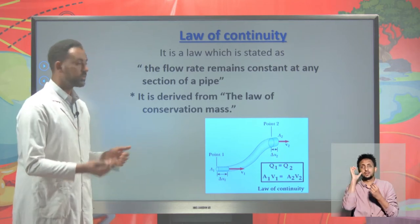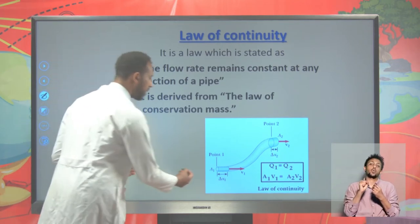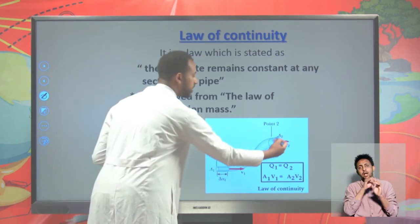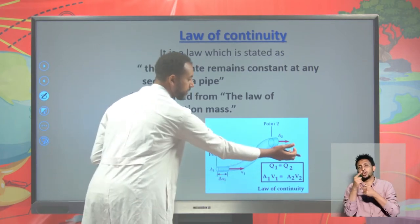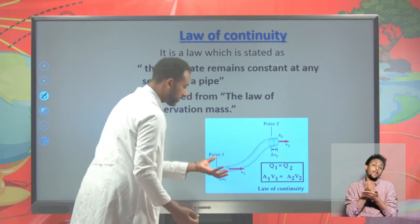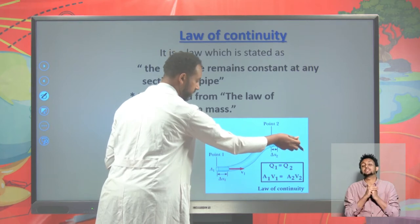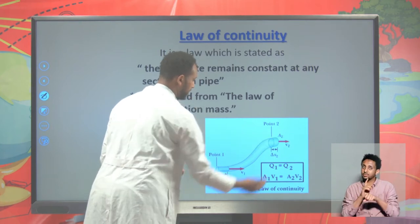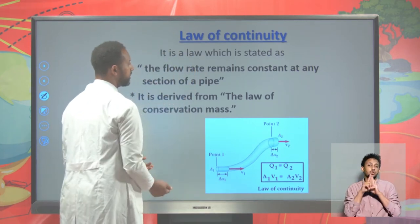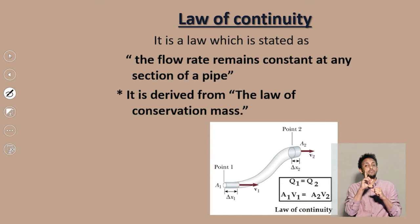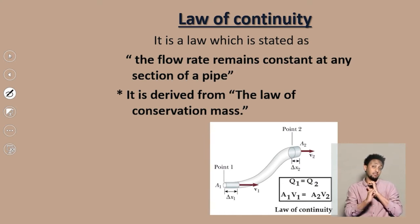Mass is neither created nor destroyed. So the amount of mass that you insert at one end is the same as the amount of mass collected at the other end. Meaning, the volume of water per unit time T is the same at both sections. This law is known as the law of continuity — the flow rate at any section of the pipe remains constant.